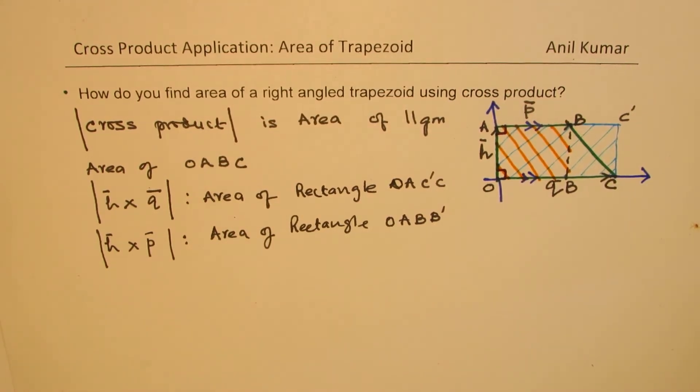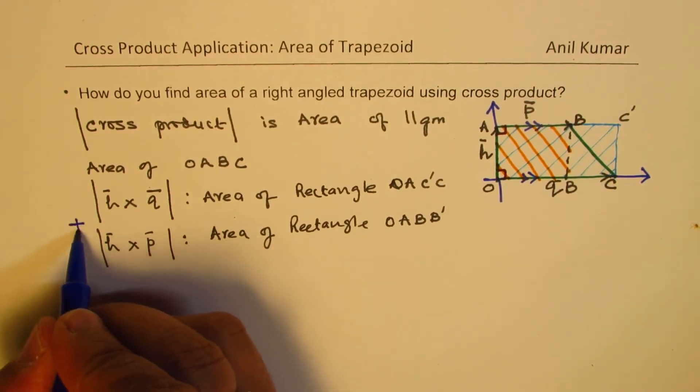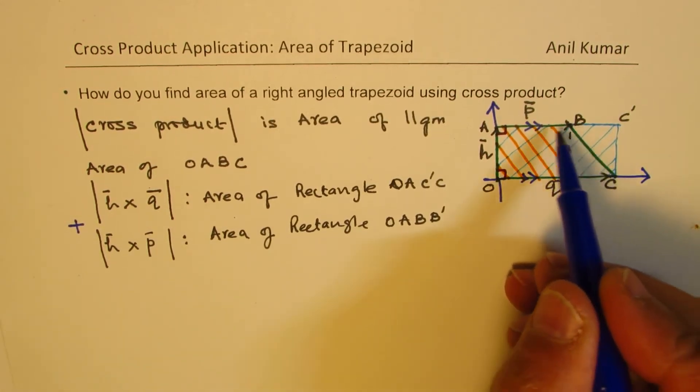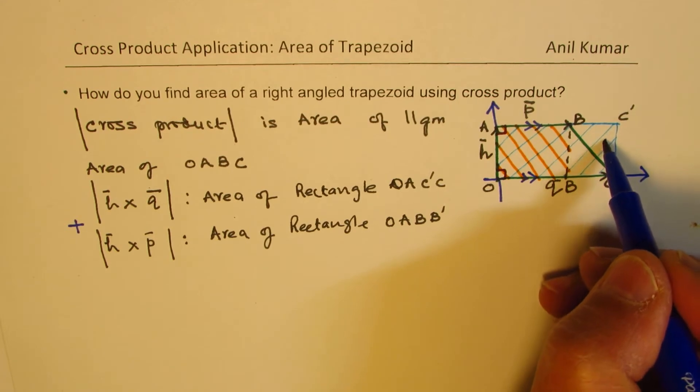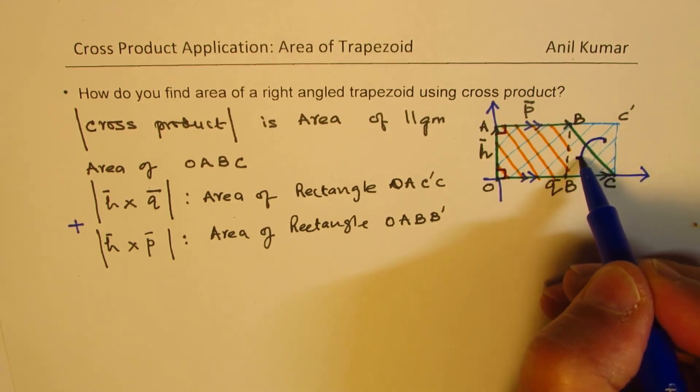Now, clearly, as seen from the figure, if I add these two areas, if I combine these two areas, then we actually have the area of the trapezoid twice, because this portion folds over to this, correct.